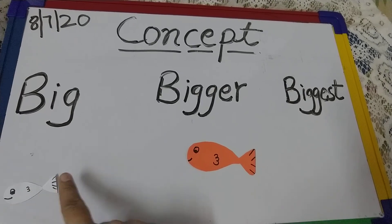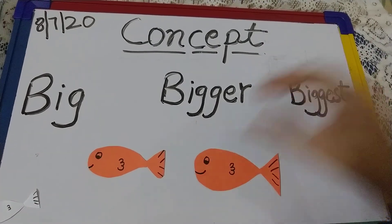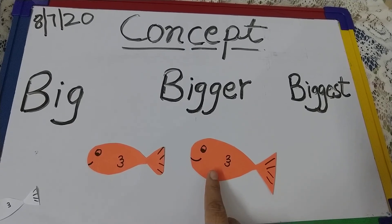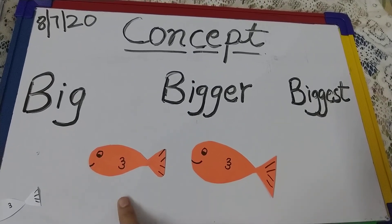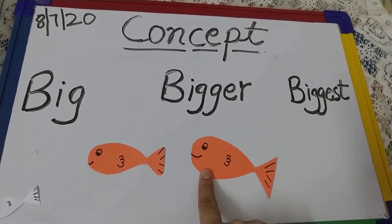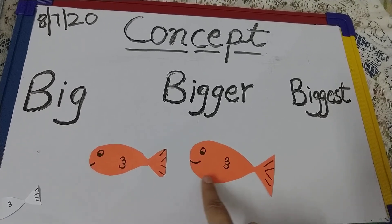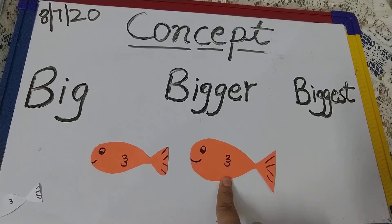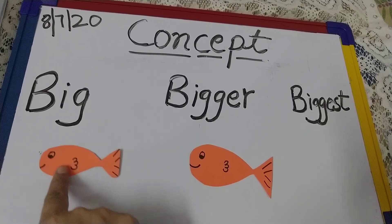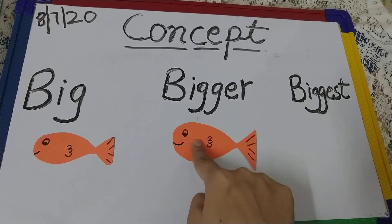So now I have one more fish. Now tell me which fish is big? Yes, this fish is big. So what should I call it now? This is a bigger fish. So children, this is a big fish and this is a bigger fish.